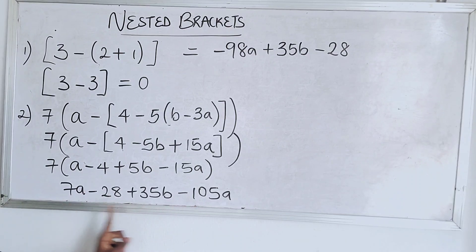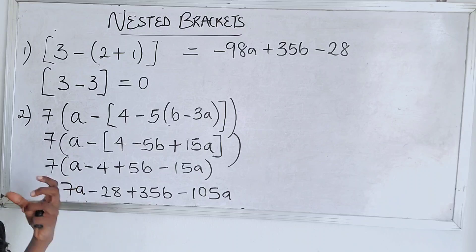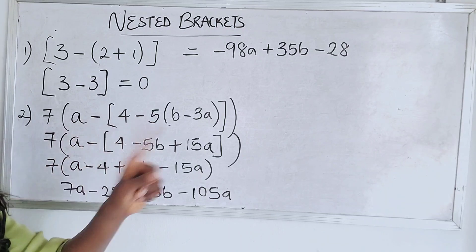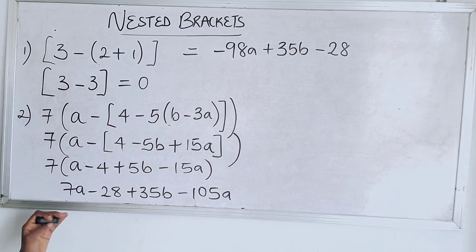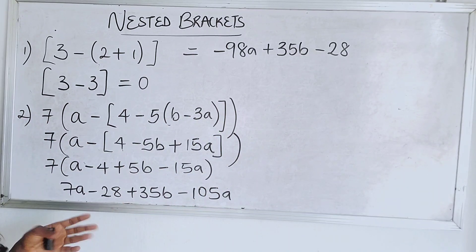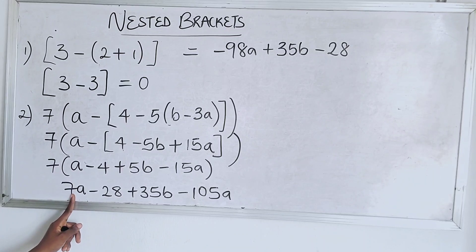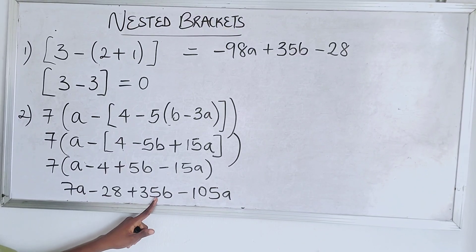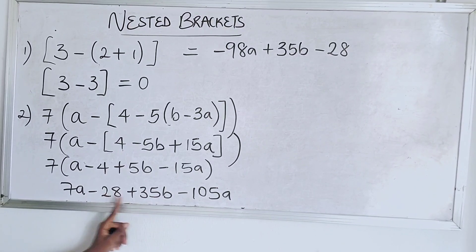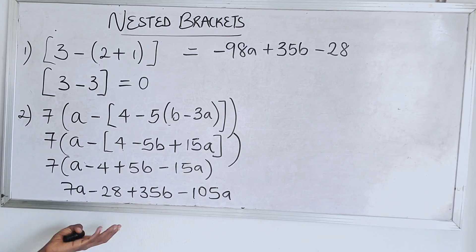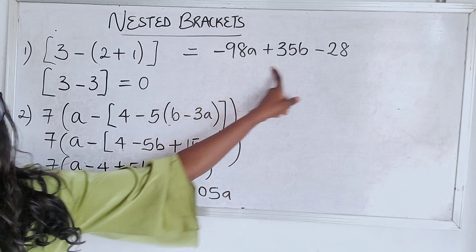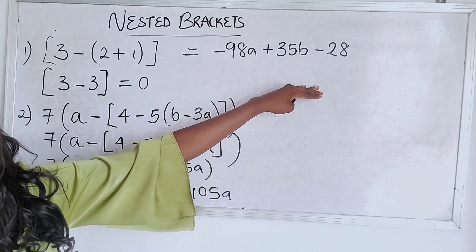If you don't follow what we're doing, check our previous video — I'll link it here. We collected like terms because a and a look alike; they are siblings. So we solved those together. We are left with 35b and minus 28 — b and a number don't look alike, so they can't be combined. That's why this is the final answer.